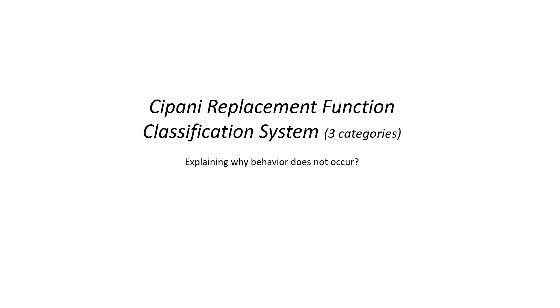In Chapter 4, I cover functional treatment that is related to the classification system in my book. While my aforementioned classification system for problem behavior explains why a behavior occurs, in Chapter 4 you will find an explanation for why behavior does not occur in certain circumstances. It's called the Sapani Replacement Function Classification System.